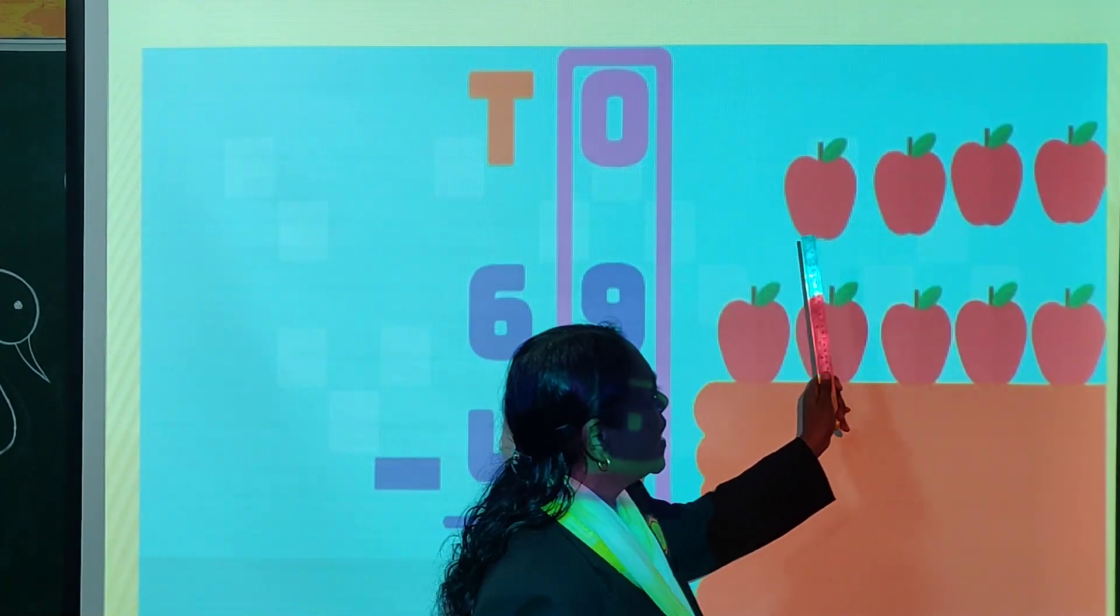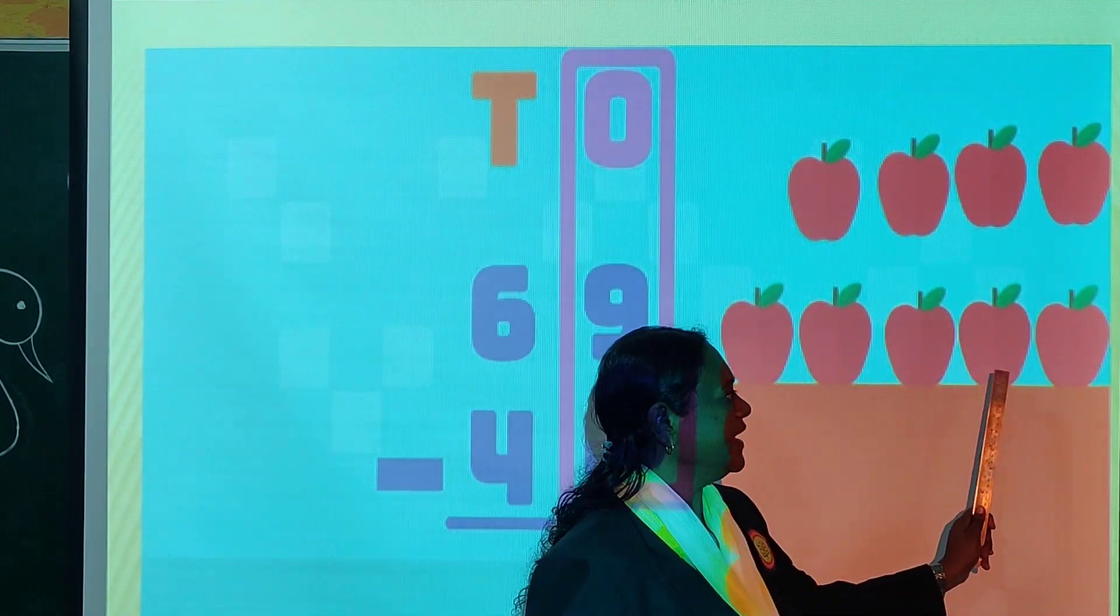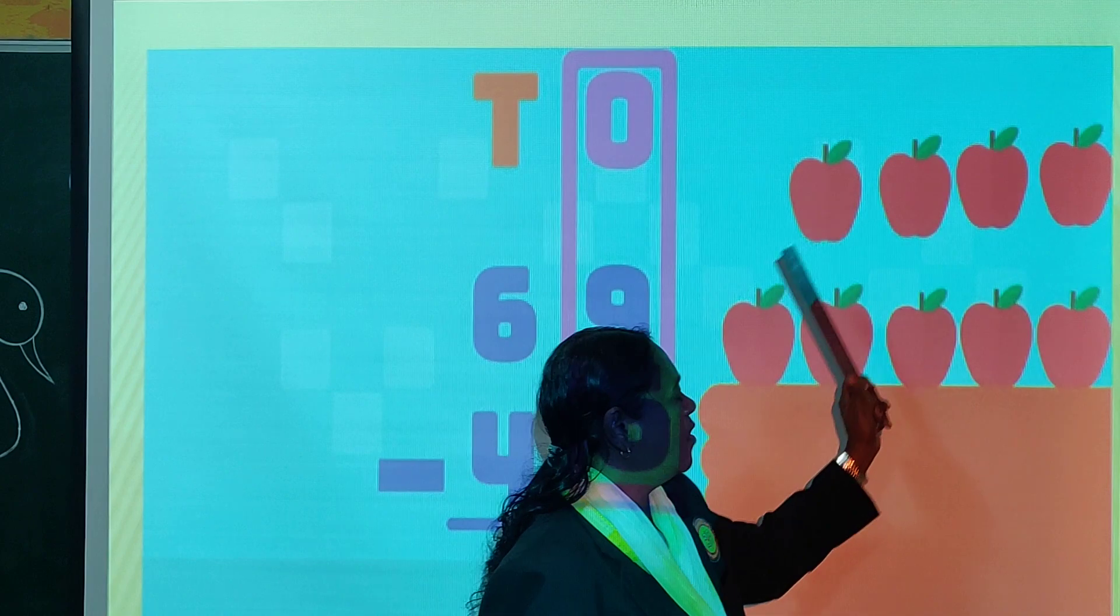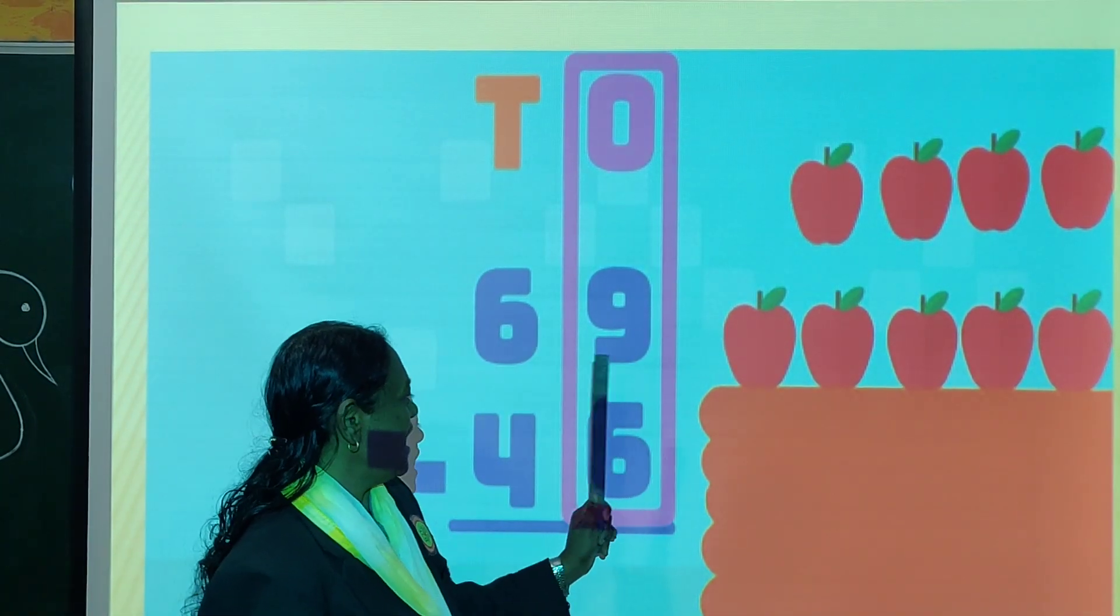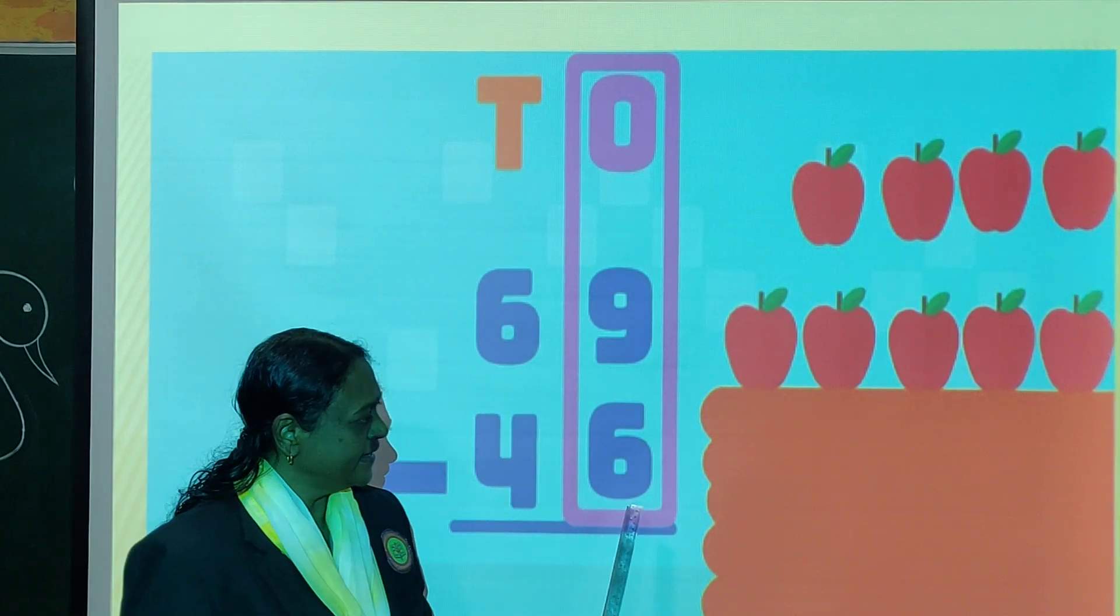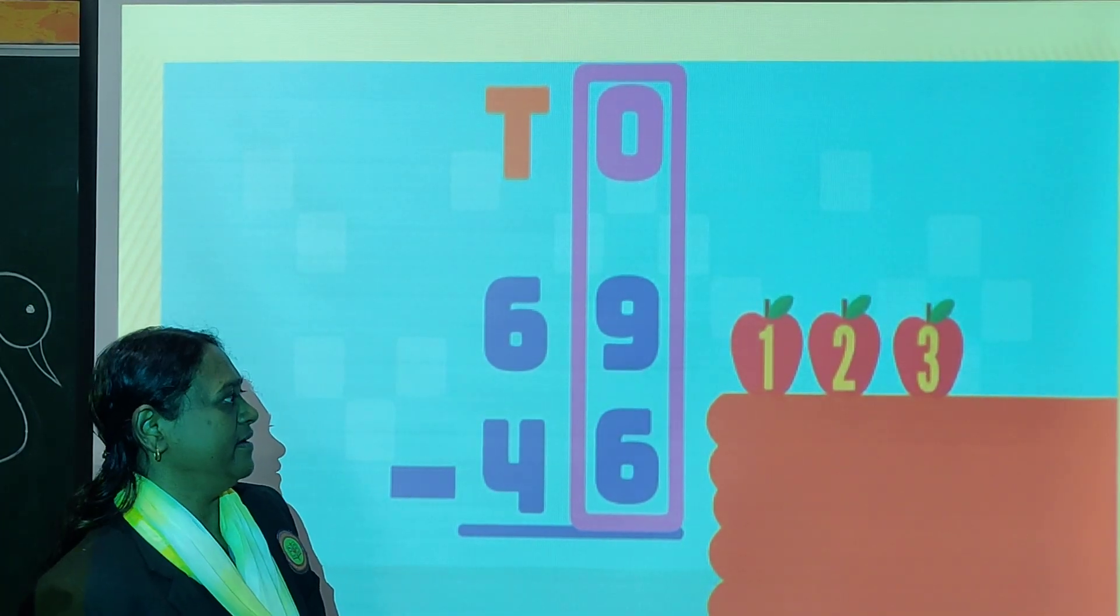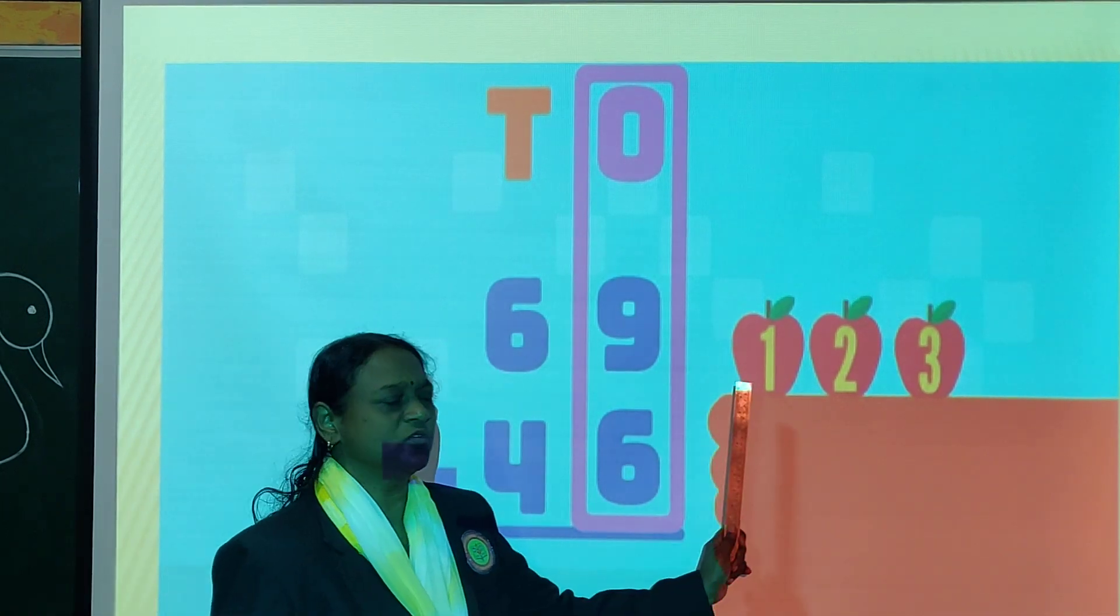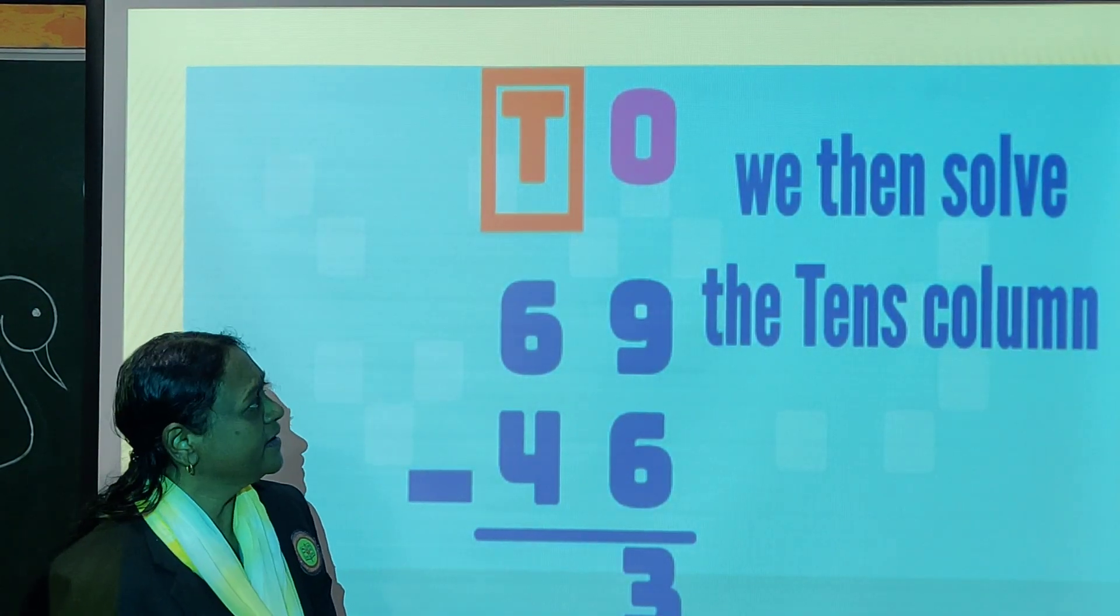So our children count 1, 2, 3, 4, 5, 6, 7, 8 and 9. How many apples are here? 9. From that we have to minus 6. So what is the remaining? Now we minus 6, so remaining is 1, 2 and 3. So 9 minus 6, the answer will be 3.